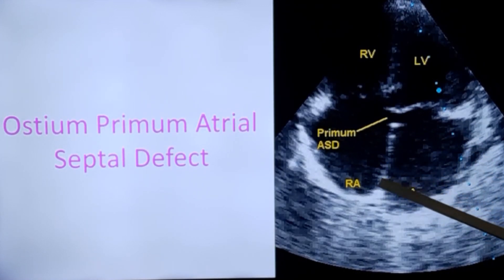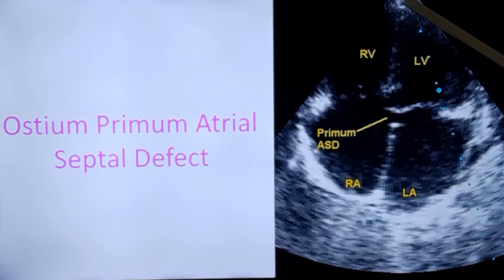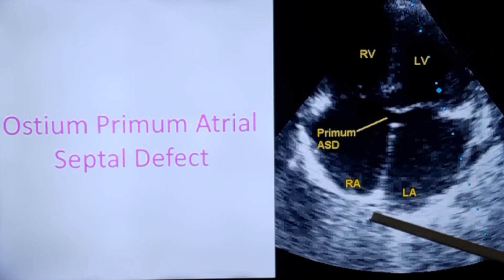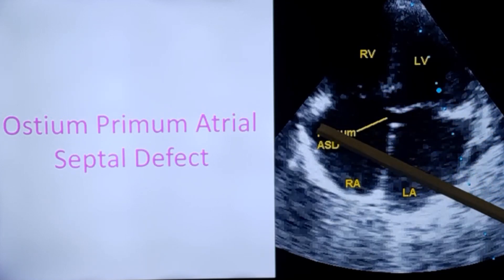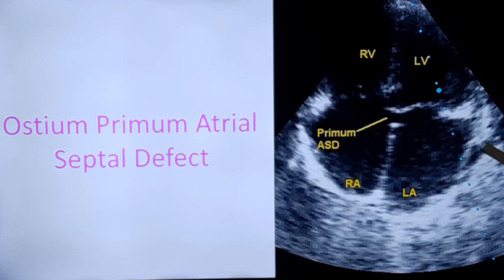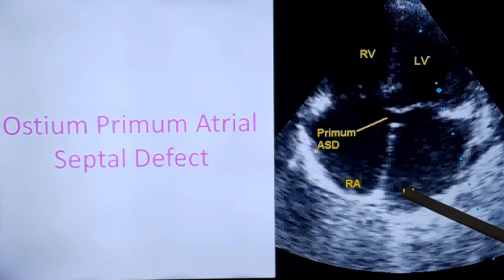Left atrium, right atrium, left ventricle, right ventricle. This is from the apical four-chamber view — the transducer is at the apex of the heart and you can see all four chambers as in a textbook description. Here you can see these translucencies are the pulmonary veins draining into the left atrium. Usually you can see only three pulmonary veins in most echocardiographic views.